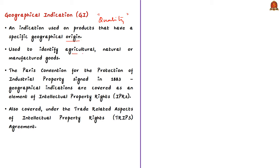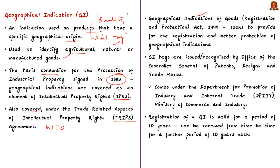The tag is used to identify agricultural, natural, or manufactured goods. If your product gets a GI tag, only products produced in the geographical area can bear it. The Paris Convention for the Protection of Industrial Property, signed in 1883, says that geographical indications are covered as an element of intellectual property rights, and they are also covered under the Trade Related Aspects of Intellectual Property Rights — that is the TRIPS agreement of WTO. After becoming a member of the TRIPS agreement, India enacted the Geographical Indications of Goods (Registration and Protection) Act of 1999, which came into enforcement in 2003.